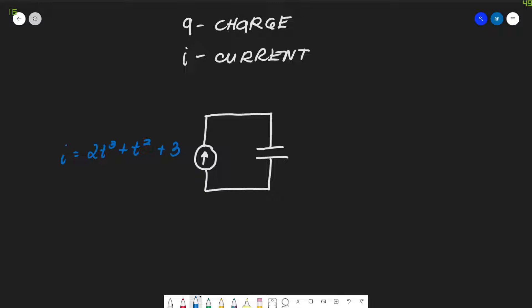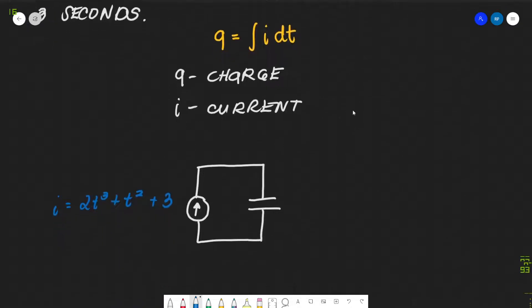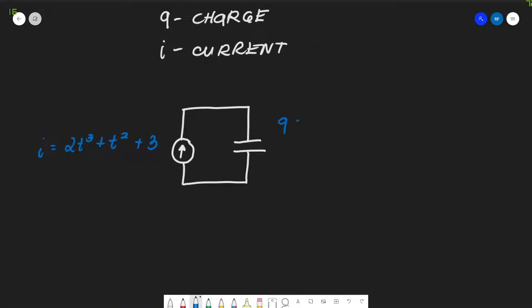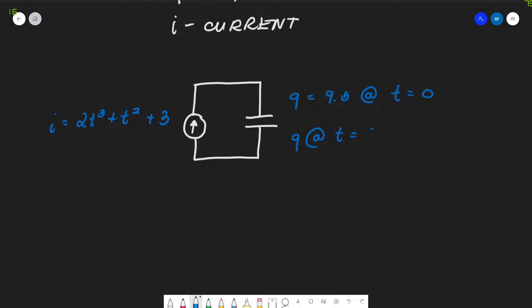The initial charge is 9.5 coulombs. Since our problem is time-dependent, as seen from the integral i dt, at time 0 — because the condition is initial — q = 9.5. We are asked to find the charge at t = 3 seconds.